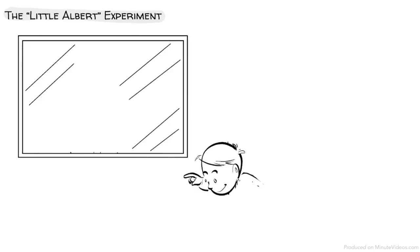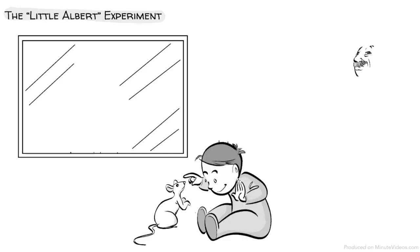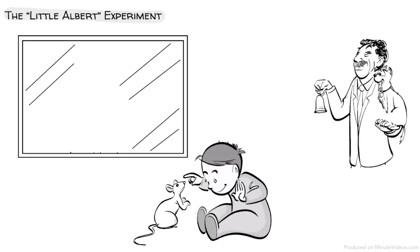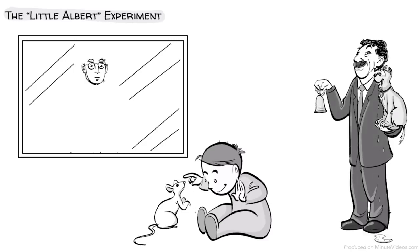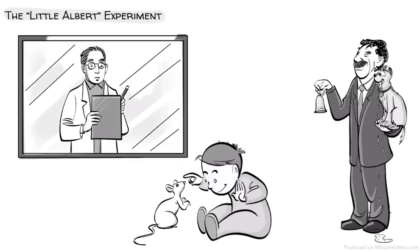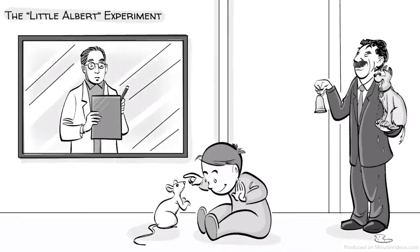With the Little Albert experiment, Watson used the method of classical conditioning to program a baby to be afraid of a lab rat. Earlier, Pavlov demonstrated how conditioning can trigger biological responses that are inherited genetically. Watson hypothesized that we can also instill new behaviors that were not inherited.